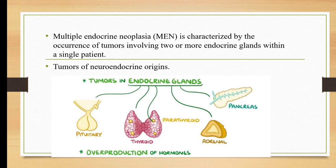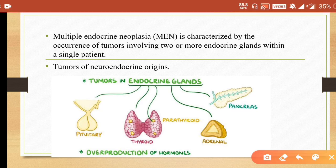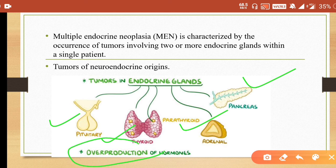Multiple Endocrine Neoplasia is characterized by the occurrence of tumors involving two or more endocrine glands within a single patient. The endocrines affected in this syndrome include the pituitary, thyroid, adrenal (particularly adrenal medulla), and pancreas. Tumors in all four glands might occur, and because of these tumors there would be overproduction of hormones.